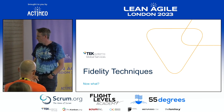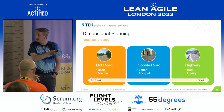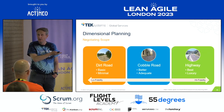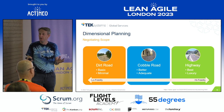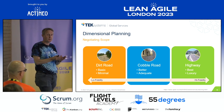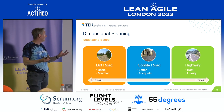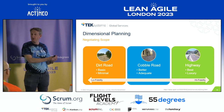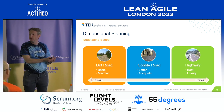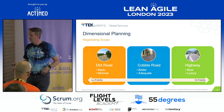How can you use that? What sort of techniques can we use? Already talked about dimensional planning — that's a really easy one. Just start talking in terms of what level of solution: we've got three levels. Do we want a dirt road, a cobble road, or a highway? Should we just build a dirt road solution first — what would that look like?